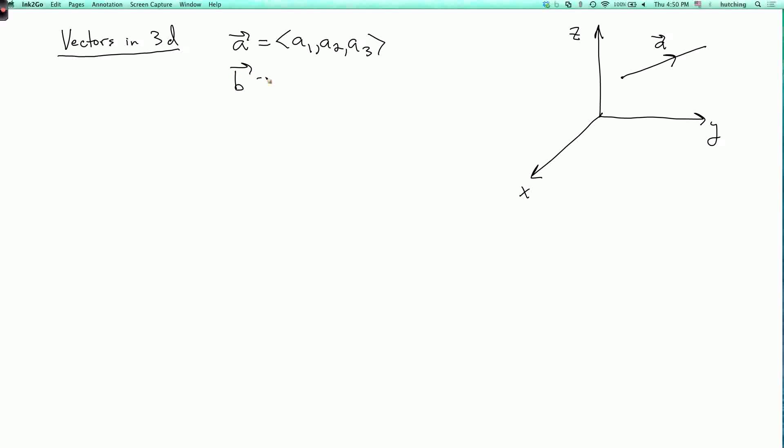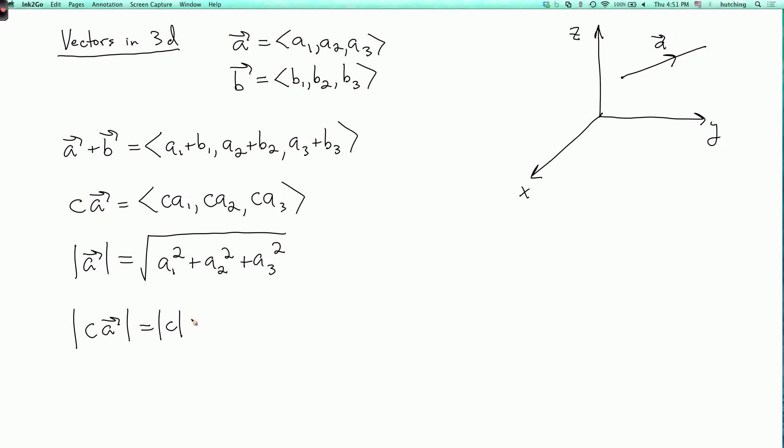And then the basic operations that we defined before work analogously. So if B is another vector with components B1, B2, B3, then A plus B is obtained by adding the components. So it's A1 plus B1, comma A2 plus B2, comma A3 plus B3. If C is a scalar, then C times A is obtained by multiplying the components of A by C. So it's C A1, comma C A2, comma C A3. And the length of the vector A, by our distance formula in three-dimensional Euclidean space, it makes sense to define this as the square root of A1 squared plus A2 squared plus A3 squared. And by the same argument as before, the length of C times A is the absolute value of C times the length of A.